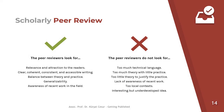What do peer reviewers look for? They look for relevance and attraction of the work to readers of the field, clear and coherent writing that is internally consistent, accessible, and maintaining an appropriate balance between theory and practice. They also look for generalizability of specific contexts to other contexts, and awareness of recent work in the field — so the literature review should include recent work.